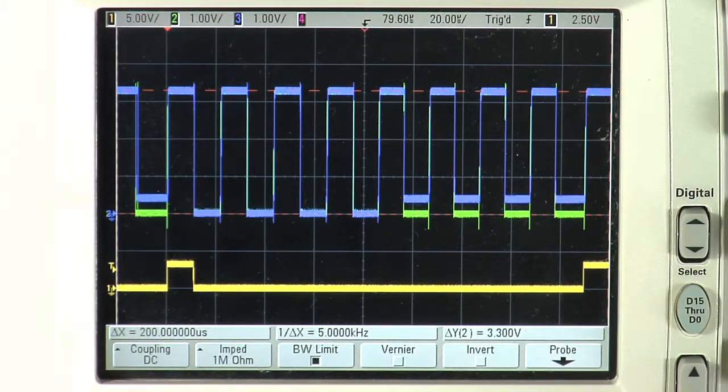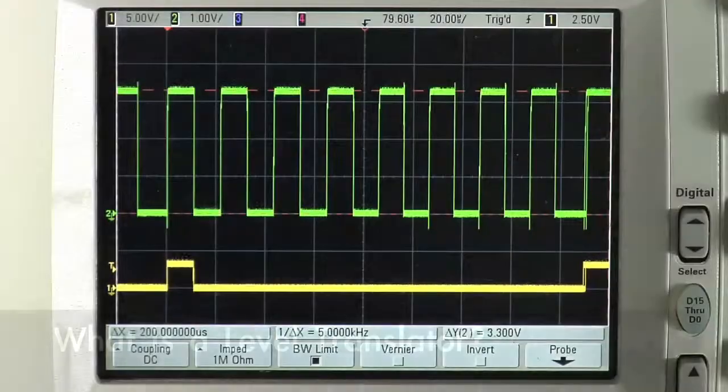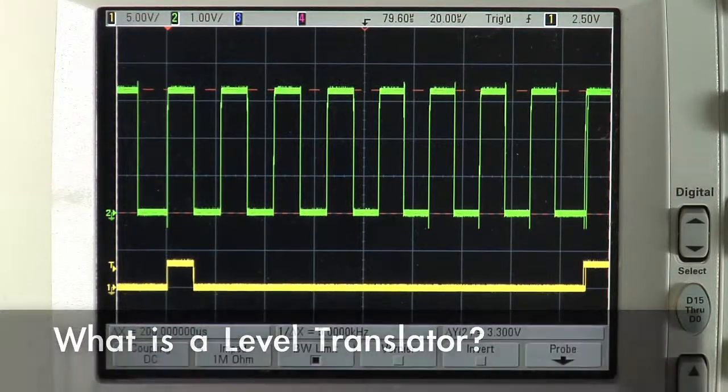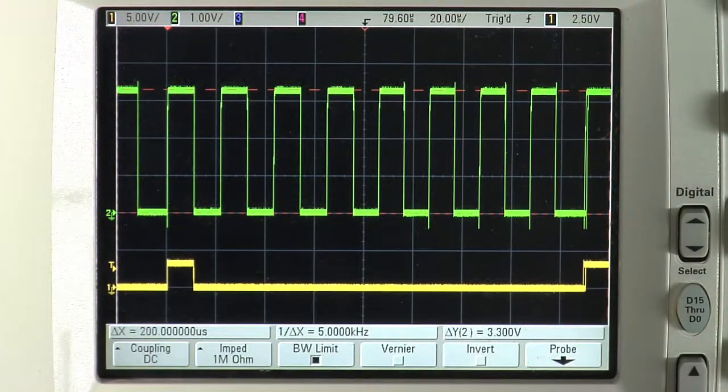These signals are both 3.3 volts in amplitude, and they represent a signal that is buffered from one section to another. Because the standard I2C bus specification operates with 5 volts amplitude signals, and many new ICs are limited to lower voltages, NXP level translators bridge the gap.